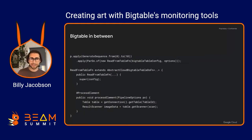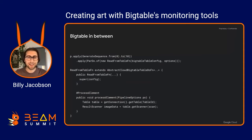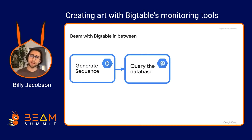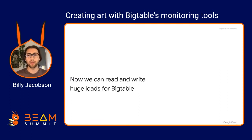Here's what I do to get Bigtable in between: I start by generating my sequence similar to writing data, then I apply my do function — the read from table function — which extends that abstract Cloud Bigtable do function. In my process element, I can just call get connection, and that takes care of all those distributed elements for me. I can just get the table and interact with it there. Now I can generate a sequence and query the database.